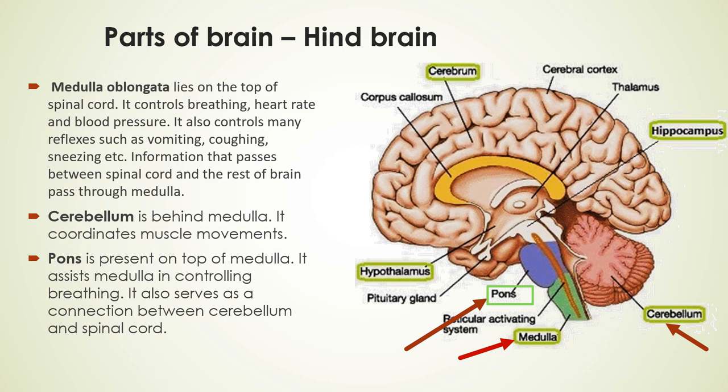The cerebellum lies behind the medulla and it coordinates muscle movements. Pons, also part of the brain stem, is present on top of the medulla, assists the medulla in controlling breathing, and serves as a connection between the cerebellum and the spinal cord.